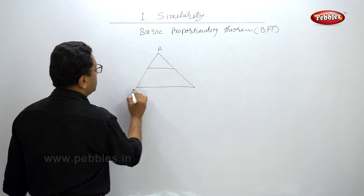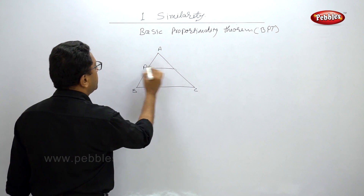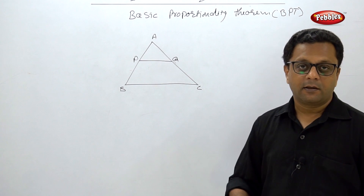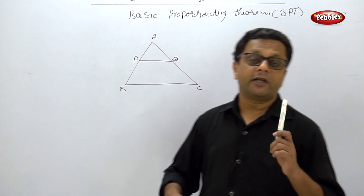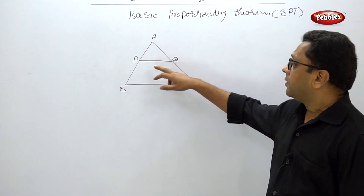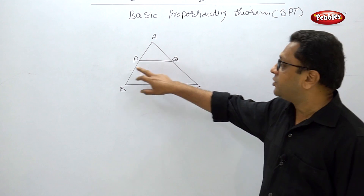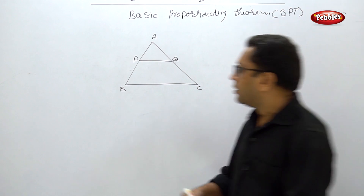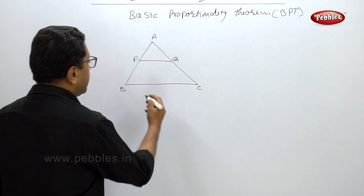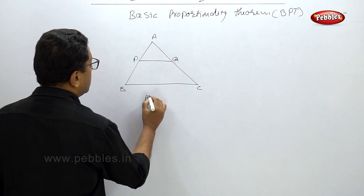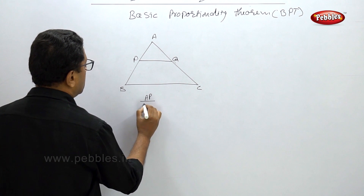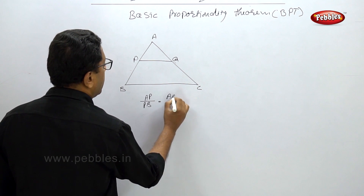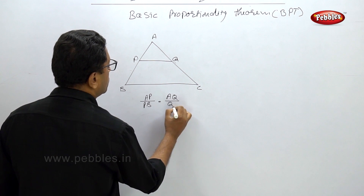This is triangle ABC and this is PQ. PQ is parallel to BC. Then the Basic Proportionality Theorem says that PQ divides these two sides in proportion. So in this case, AP upon PB is equal to AQ upon QC.